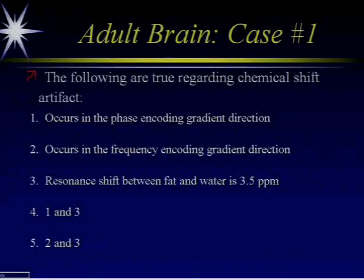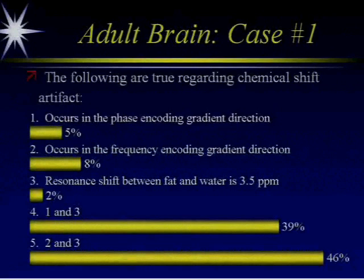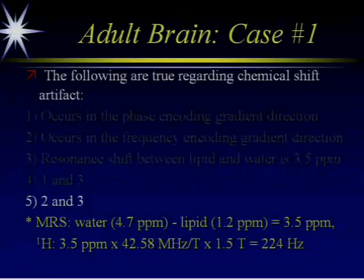Number five is correct — the majority got that right. The reason you get chemical shift artifact is that fat and water spin at slightly different resonances or frequencies. When you map their location in the frequency encoding direction they get slightly mismatched, causing that artifact at the edges. The difference in their frequency or resonance is 3.5 parts per million. From MR spectroscopy: water is at 4.7 ppm and lipid is at 1.2 ppm, and the difference is 3.5 ppm.